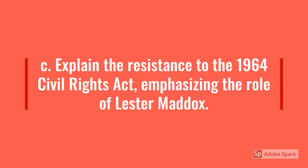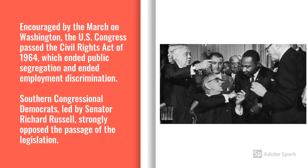In Standard C, we explain the resistance to the 1964 Civil Rights Act, emphasizing the role of Lester Maddox. Encouraged by the March on Washington, the U.S. Congress passed the Civil Rights Act of 1964, which was signed into law by President Lyndon B. Johnson. The Civil Rights Act of 1964 forbade discrimination based on sex and race in hiring, promoting, and firing. Southern Congressional Democrats, led by Senator Richard Russell, strongly opposed the passage of the legislation.